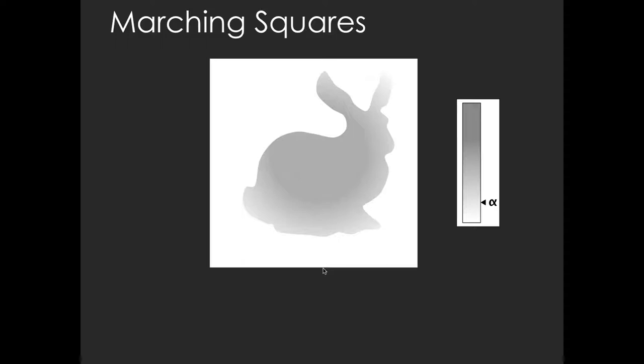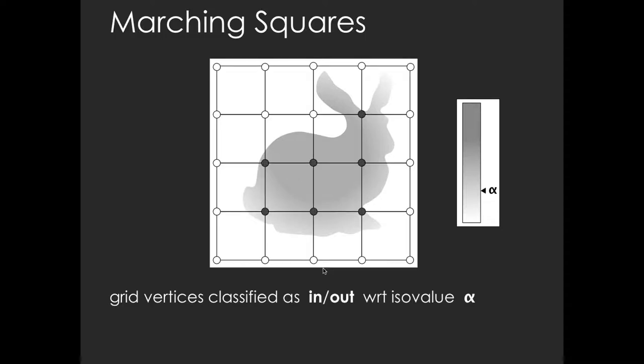We illustrate the Marching Cubes algorithm and its connection to geometry shaders by discussing first the 2D case. Given a dataset and an ISO value alpha, the goal is to extract an ISO line or a contour for the dataset. The data is overlaid with a grid, or has already been sampled that way, and the grid vertices are classified as either inside or outside the dataset with respect to the given ISO value.